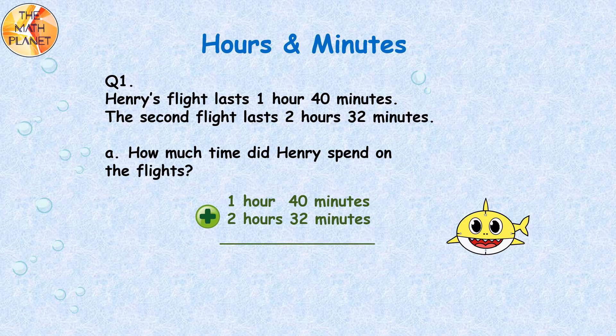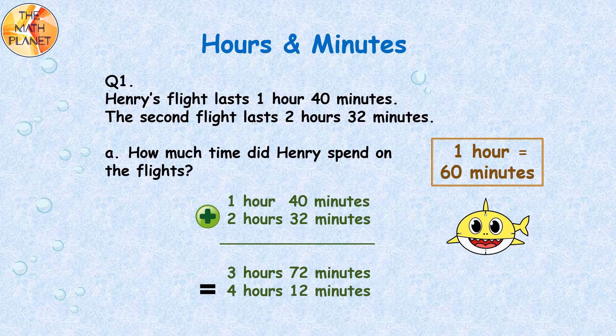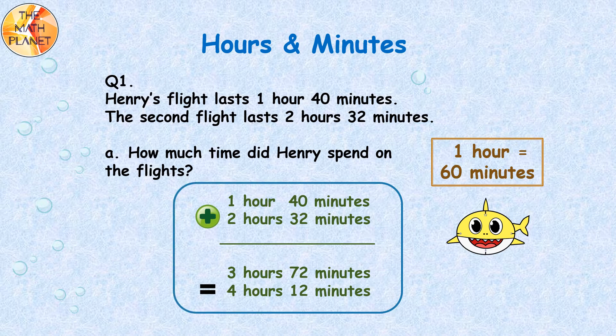The sum will be 3 hours 72 minutes. But we already know that 1 hour equals 60 minutes. Since 72 minutes is greater than 1 hour, we will regroup 60 minutes as 1 hour. So the sum will be 4 hours and 12 minutes. We can say that Henry spent 4 hours 12 minutes on both flights.